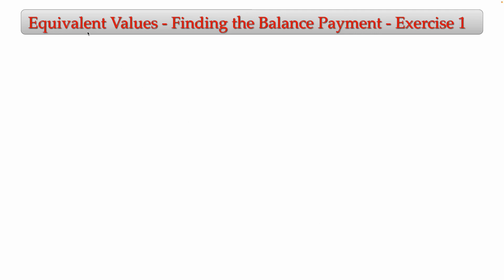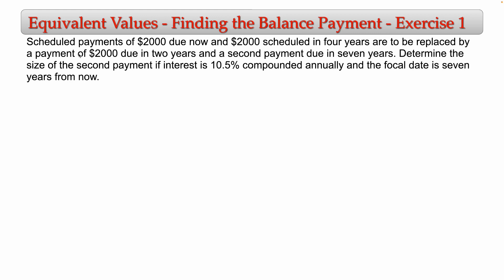Hello students. In this video I will be solving problems related to equivalent values. In these problems we have a series of payments that will be replaced, and also a series of replacement payments in which we don't know the last payment — we don't know the balance. These problems are related to finding the balance payment. The first problem says: a scheduled payment of 2000 due now and 2000 scheduled in four years are to be replaced by a payment of 2000 due in two years and a second payment due in seven years. Determine the size of the second payment if interest is 10.5% compounded annually and the focal date is seven years from now.